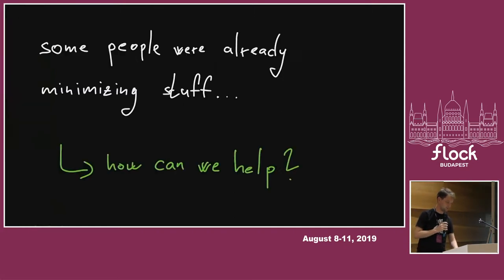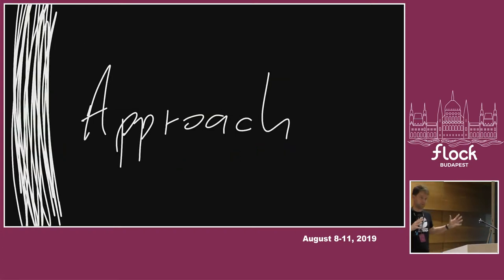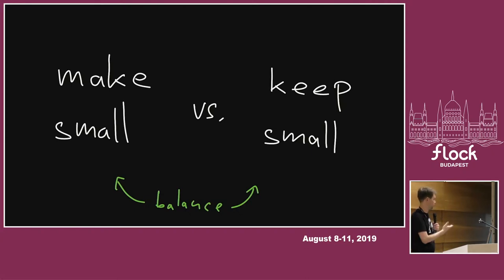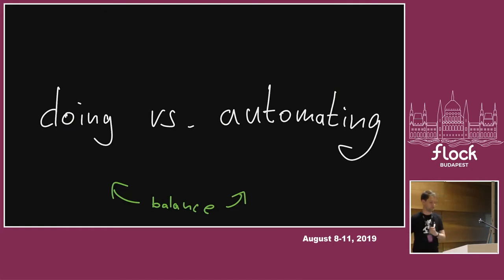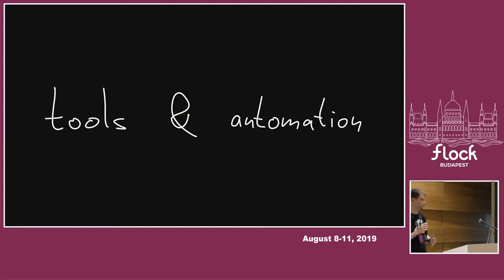Before this objective started, there were already people doing minimization work — this is nothing new. So how can we help and make it happen on a bigger scale or with bigger impact? First thing is making smaller versus keeping smaller — we need to do both. Just minimizing things and hoping they'll stay small won't work. Similarly, doing versus automating: I can do something or I can automate whatever is possible, but I need to be doing things first to know what to automate. Tools and automation will be a key focus here.